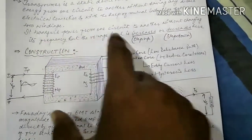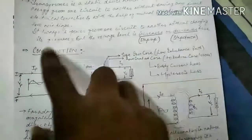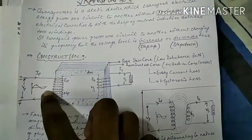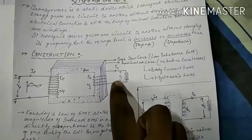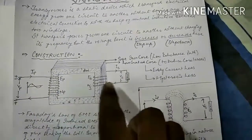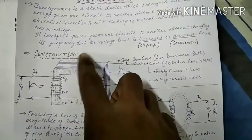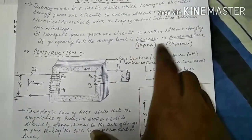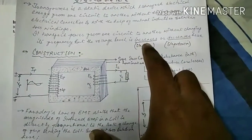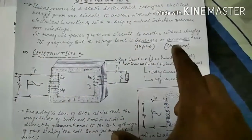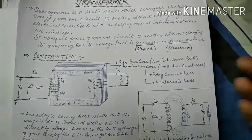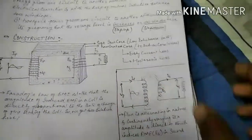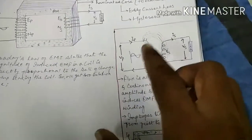A transformer transfers power from one circuit to another without changing its frequency. If we are giving 50 Hz to the primary side, the output will be 50 Hz; if we are giving 60 Hz, the output will be 60 Hz. But the voltage level increases or decreases. If it increases, it is a step-up transformer; if it decreases, it is a step-down transformer.